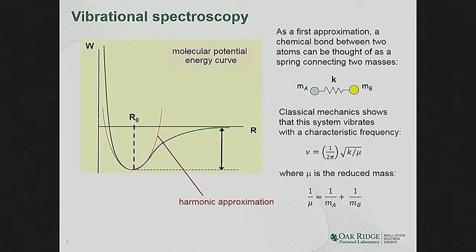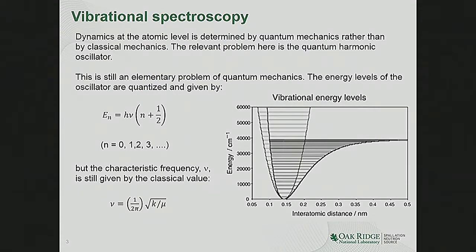In reality, quantum mechanics complicates this: chemical bonds behave as quantum oscillators and the energy of vibration is quantized. A series of discrete energy levels appear, but the characteristic frequency of the fundamental vibration is still given by the classical formula — essentially the square root of the force constant divided by the mass. This shows the kind of information we get from chemical spectroscopy: fundamentally, we get information about force constants K and how atoms interact with each other.